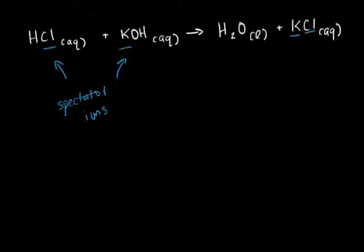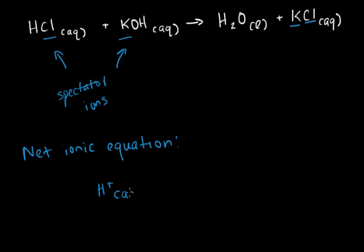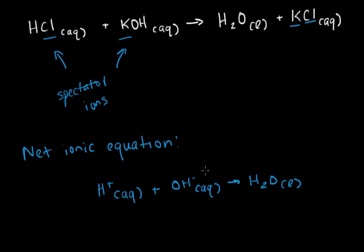If we write the net ionic equation — which excludes those spectator ions — we see that all we have is aqueous hydrogen ions and aqueous hydroxide ions, and these react together to produce liquid water. We can use this net ionic equation to help us understand the Brønsted-Lowry definitions of acids and bases.